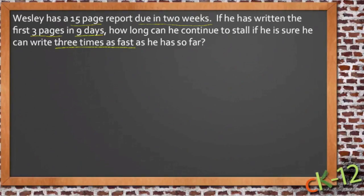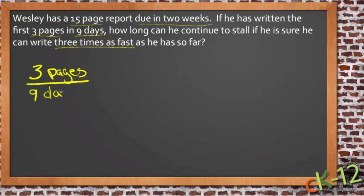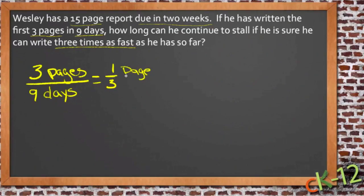Let's look at the information we have. We know he's written three pages in nine days. Three ninths reduces to one third, so he's been writing one third of a page per day. Each day he writes another one third of a page — that's why it's taken him nine days to write three pages.